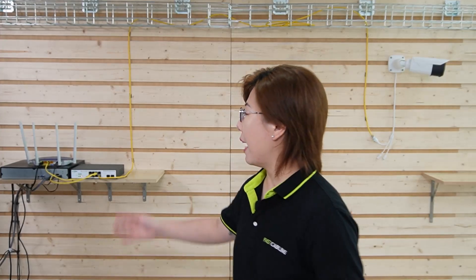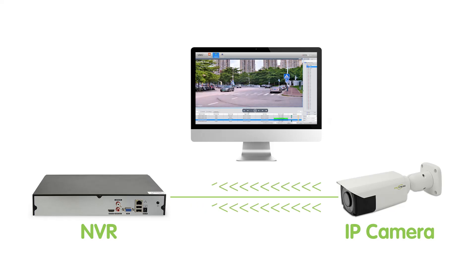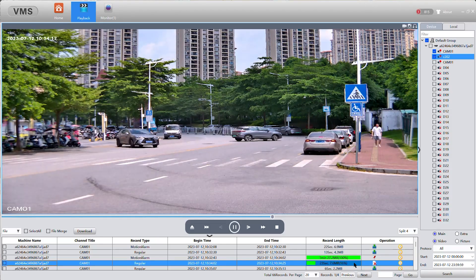Here we have the NVR — the brain behind the operation. It receives the video feed from the camera, stores it, and allows for viewing and managing the footage. Our NVR is equipped with advanced processing capability to handle human detection algorithms effectively, ensuring the system only alerts when a human is detected, not every time a cat walks by.